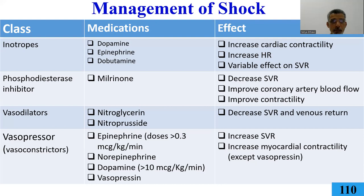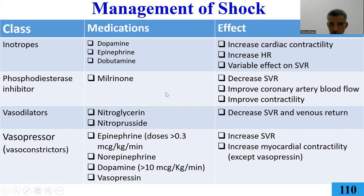Remember inotropes: dopamine affects both cardiac output and peripheral vascular resistance; epinephrine affects both; dobutamine affects the heart and may decrease systemic vascular resistance; milrinone decreases pulmonary vascular resistance but causes hypotension, so you need to prime the circulation before using it. Always do echo and hemodynamic assessment before choosing your inotrope.